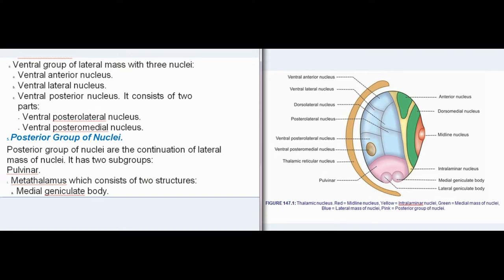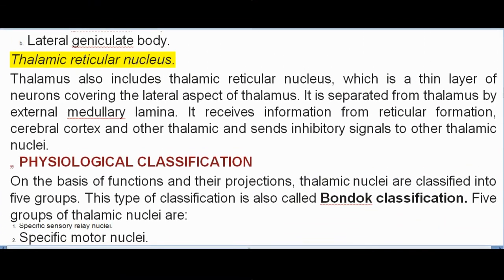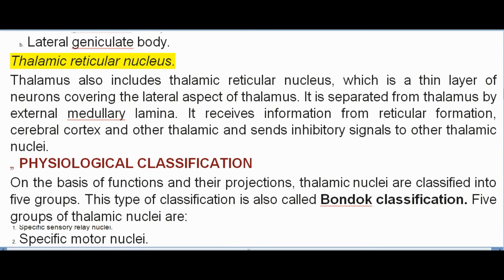Posterior group of nuclei are the continuation of lateral mass of nuclei. It has two subgroups: pulvinar, and metathalamus, which consists of two structures — medial geniculate body and lateral geniculate body. Thalamus also includes the thalamic reticular nucleus, which is a thin layer of neurons covering the lateral aspect of thalamus, separated from thalamus by the external medullary lamina. It receives information from reticular formation, cerebral cortex, and other thalamic nuclei, and sends inhibitory signals to other thalamic nuclei.